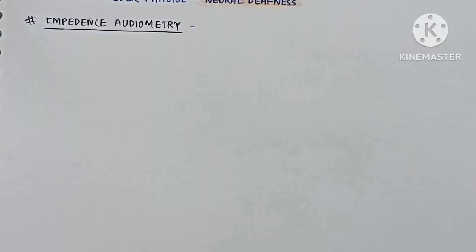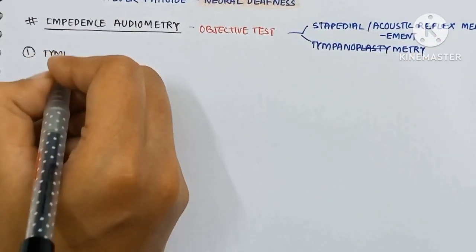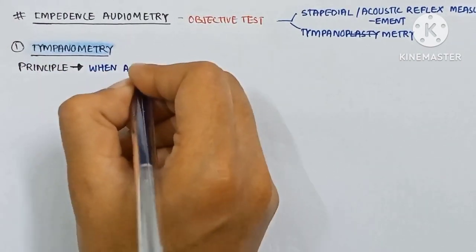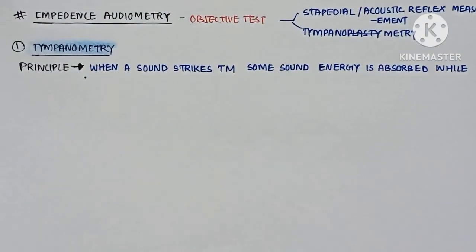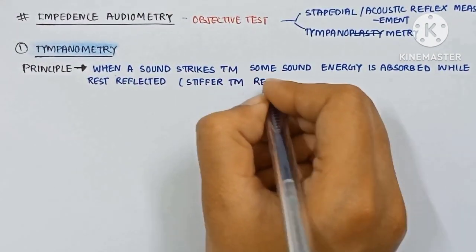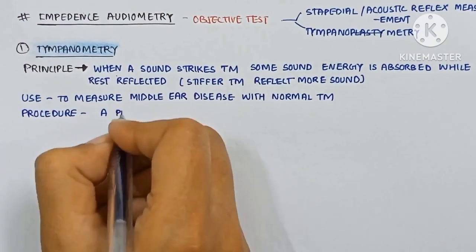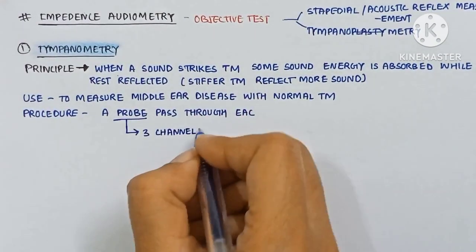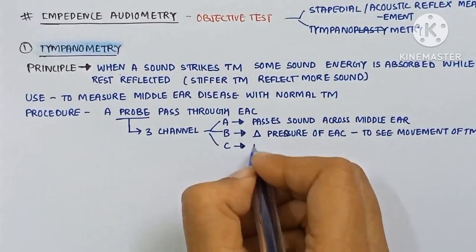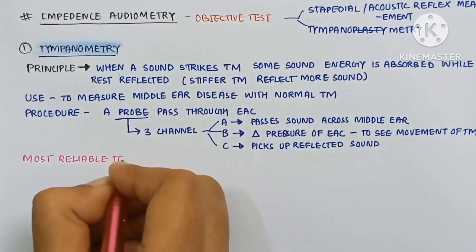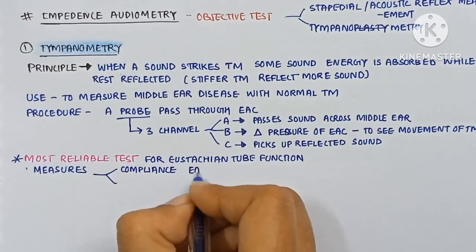Next is impedance audiometry. It is an objective test for stapedial reflex measurement and tympanometry. The principle of tympanometry: when a sound strikes the tympanic membrane, some sound energy is absorbed while the rest is reflected. A stiffer tympanic membrane reflects more sound. It is used to measure middle ear disease. The procedure: a probe is passed through the EAC with three channels — A for passing sound across the middle ear, B for changing pressure in the EAC to observe tympanic membrane movement, and C for picking up reflected sounds.